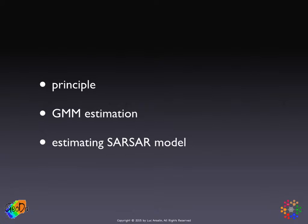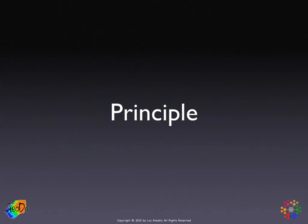We will close with the estimation of a model that includes both a lag and a spatial error term, which in the manual is called the combo model. In the literature it's often called the SAR-SAR model or double spatial autoregressive model. First, the principle, which is the same as before.